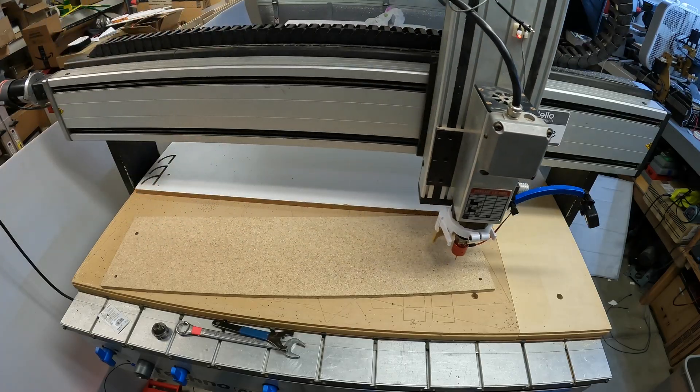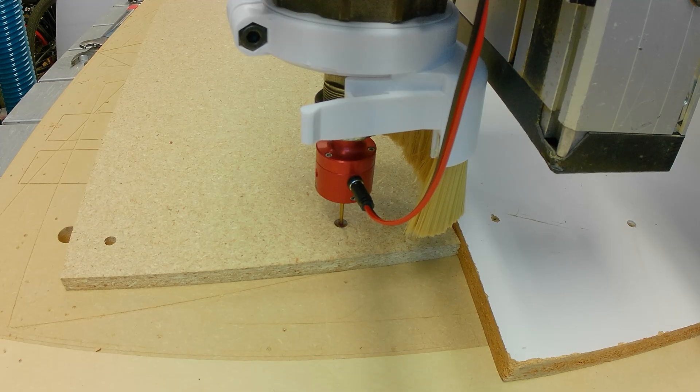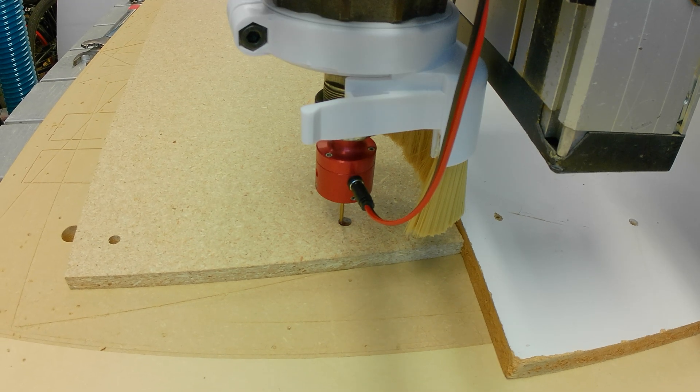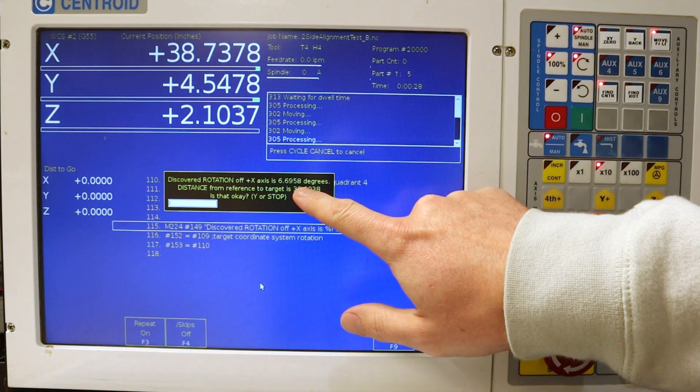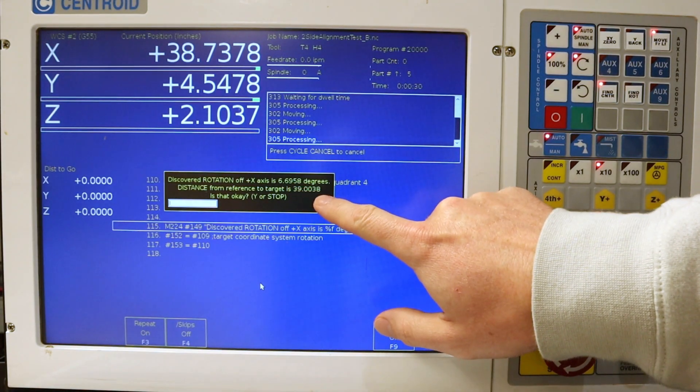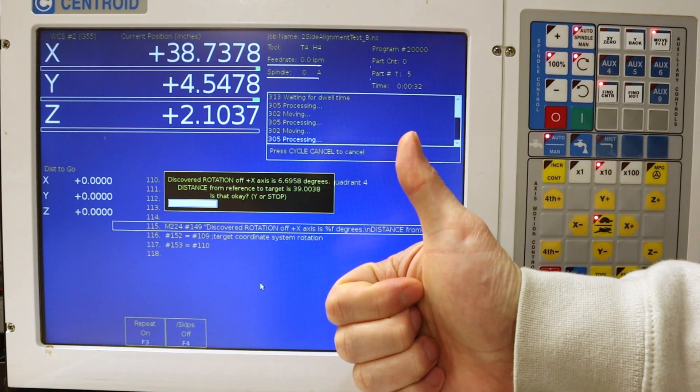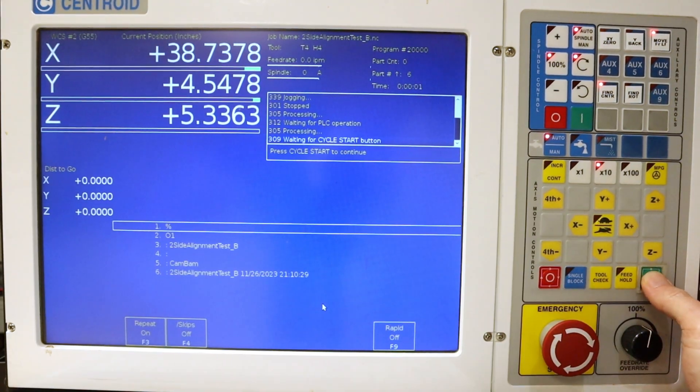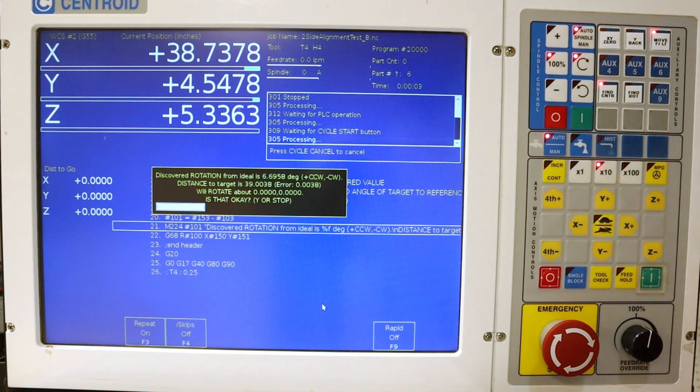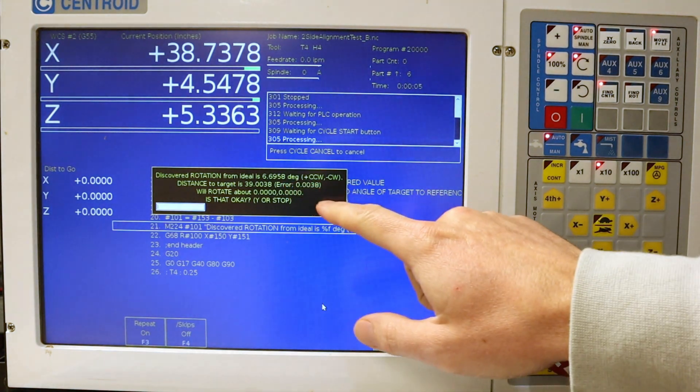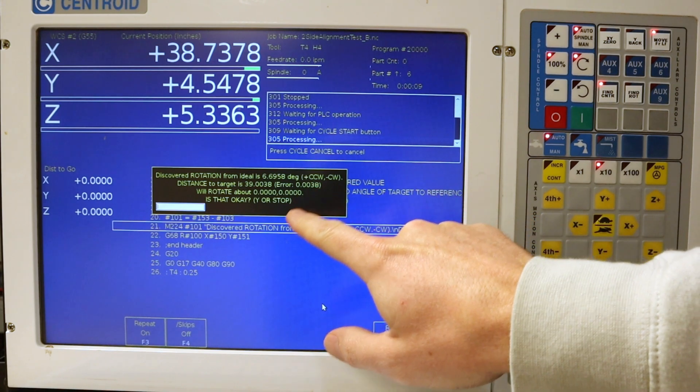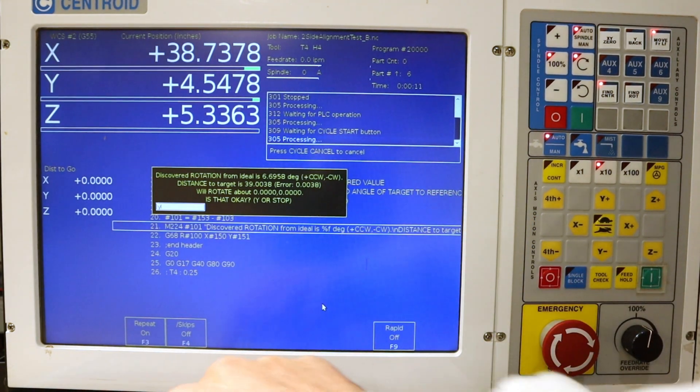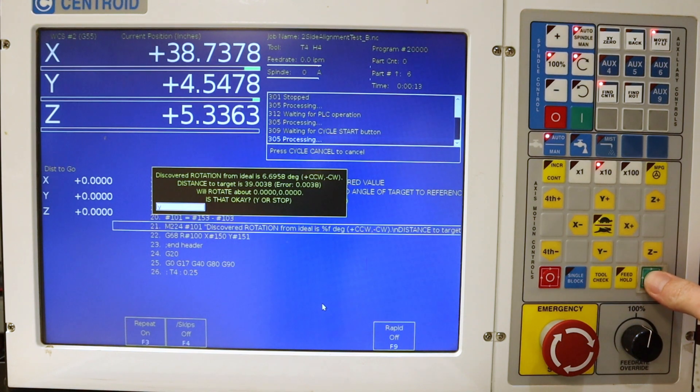Then I use another macro to find the center of the target hole. The angle and distance from the reference hole is automatically calculated and stored. We can now open the G-code for the second side and start it. It shows how it thinks it should rotate the coordinate system and displays the error in the measured distance between the reference and target holes versus the ideal distance that was set up in the file.